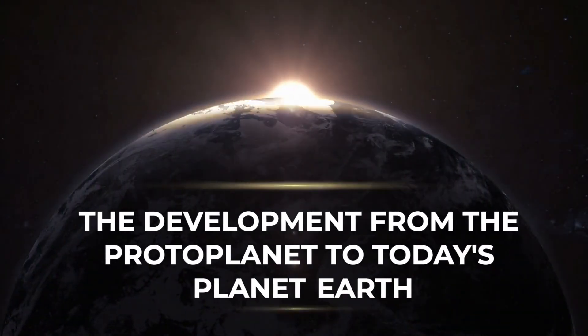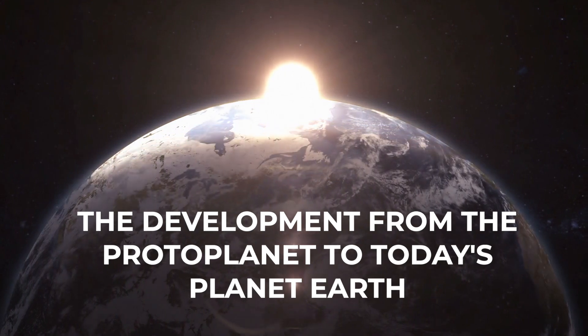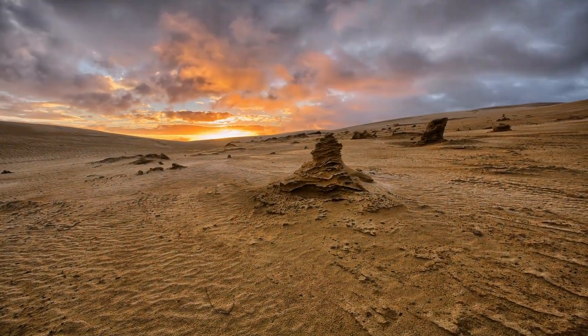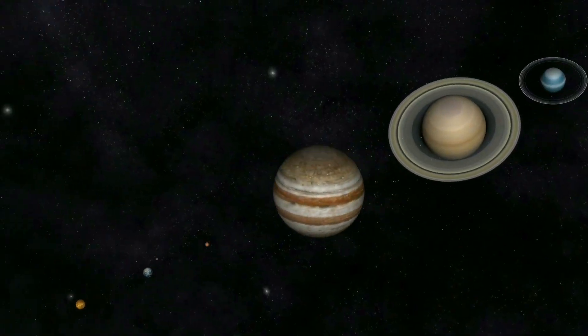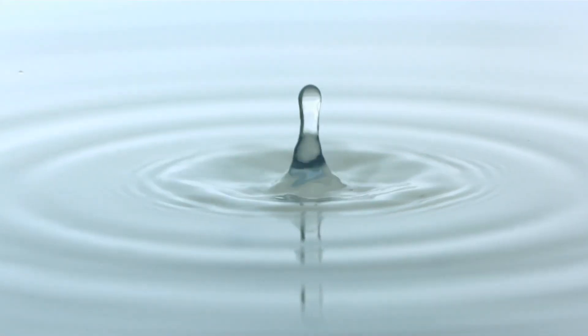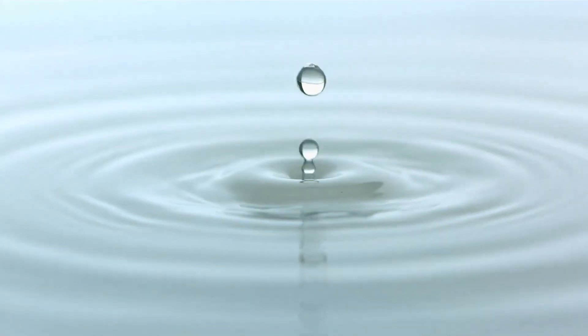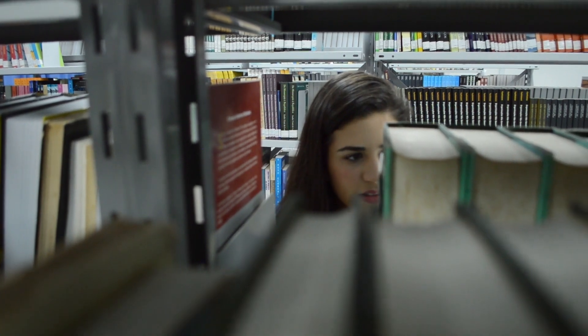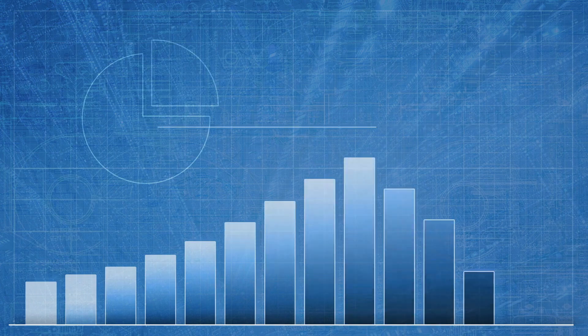The development from the protoplanet to today's planet Earth. Let one thing be said in advance. Both the issues surrounding the formation of our planet, our solar system, and the Moon, and the question of the origin of water on Earth have of course not been conclusively clarified. Nevertheless, some progress has been made in recent years.